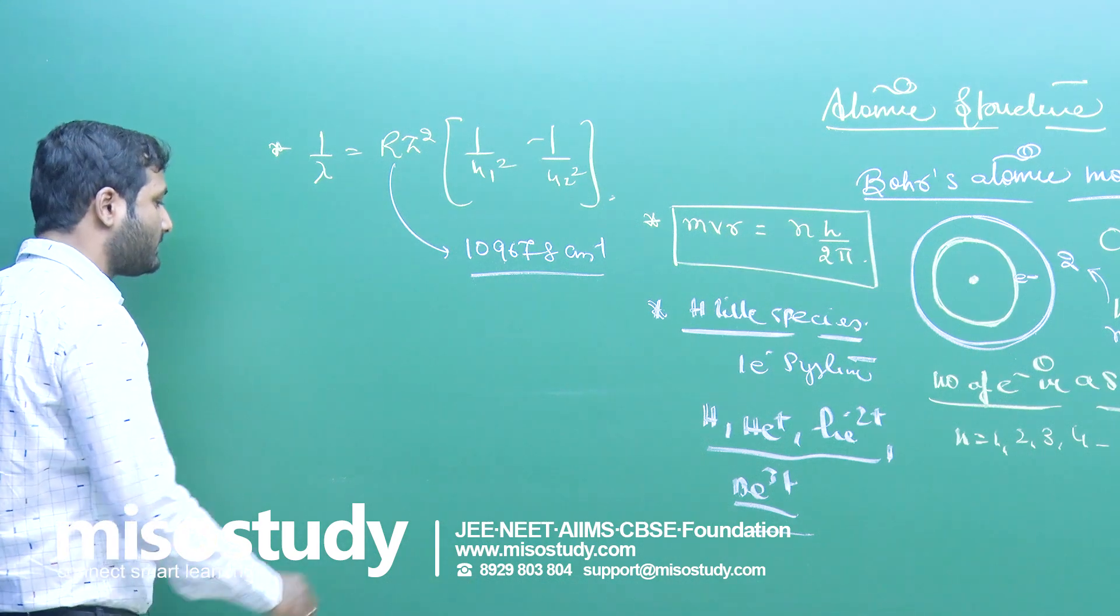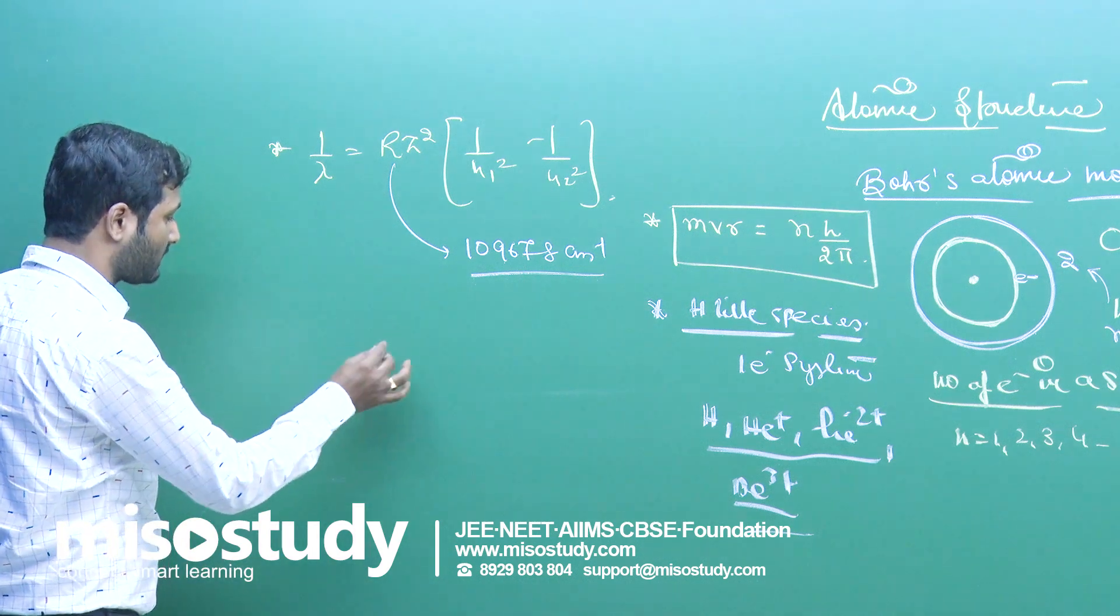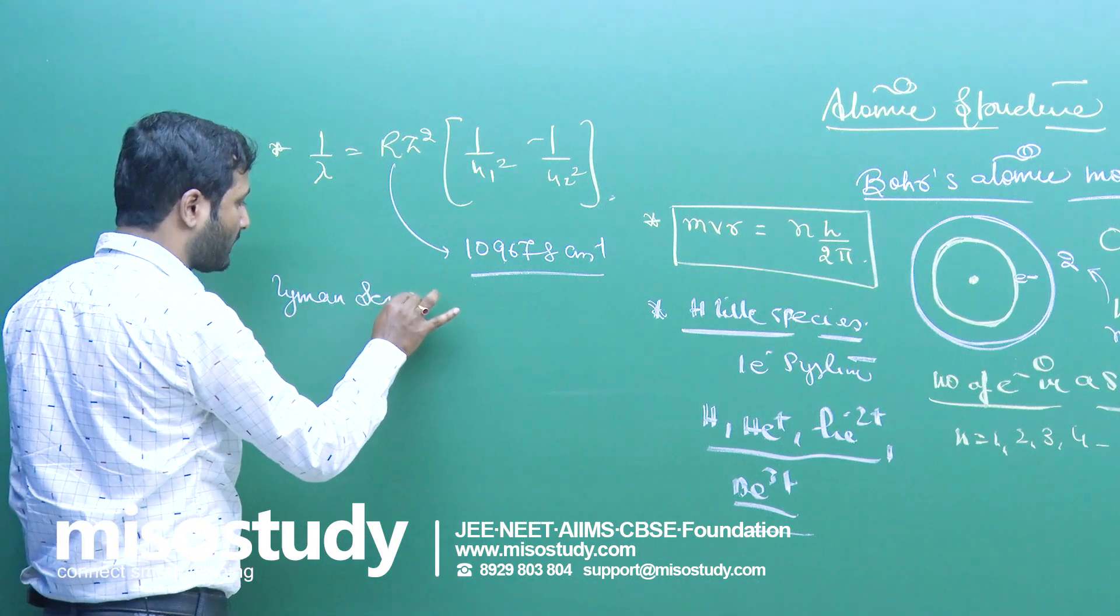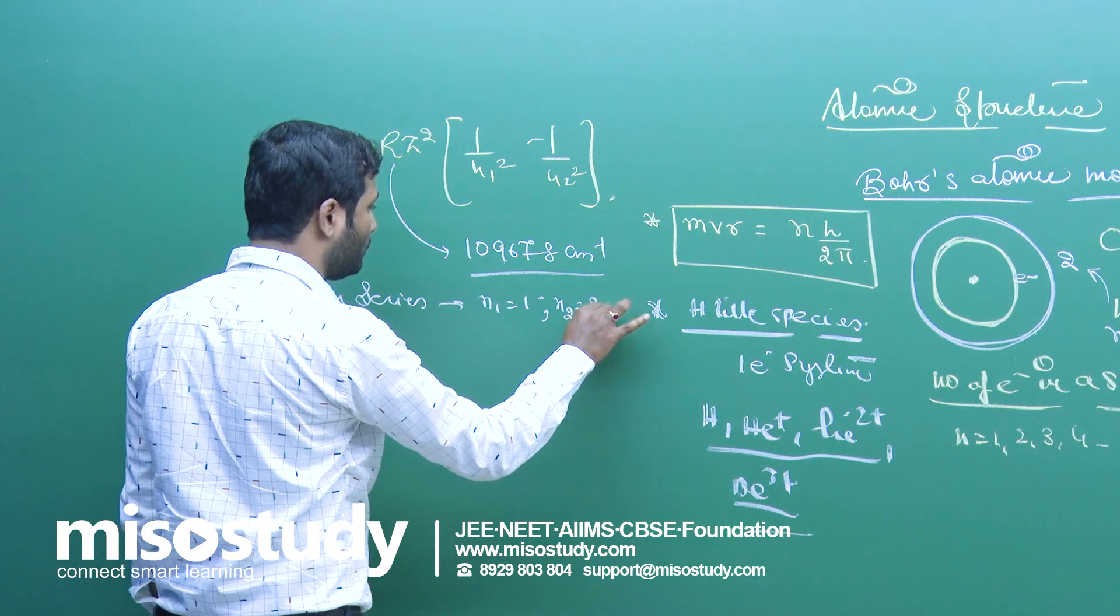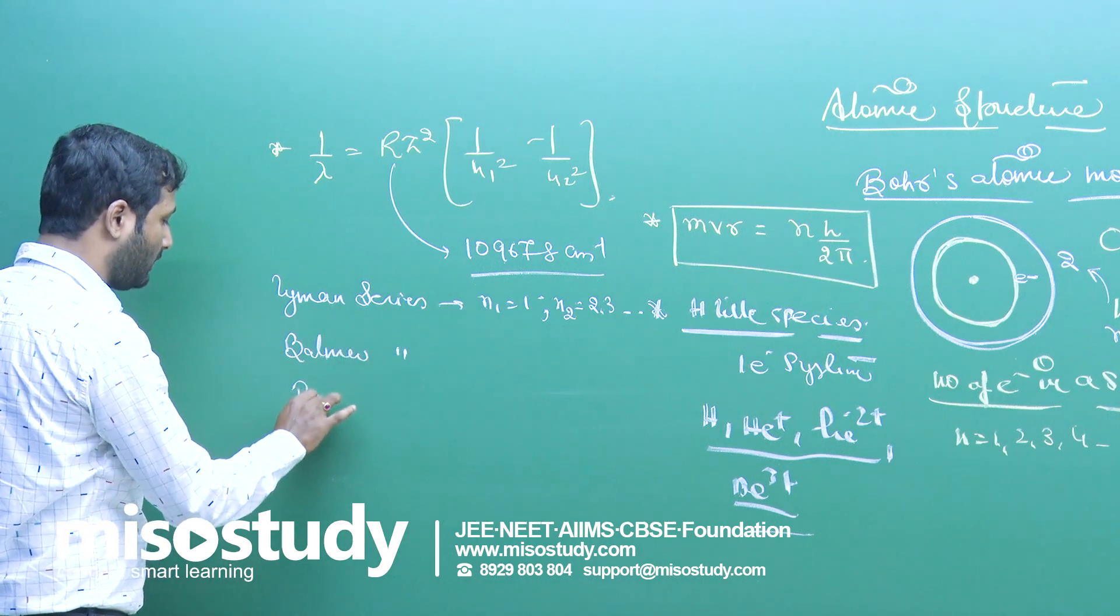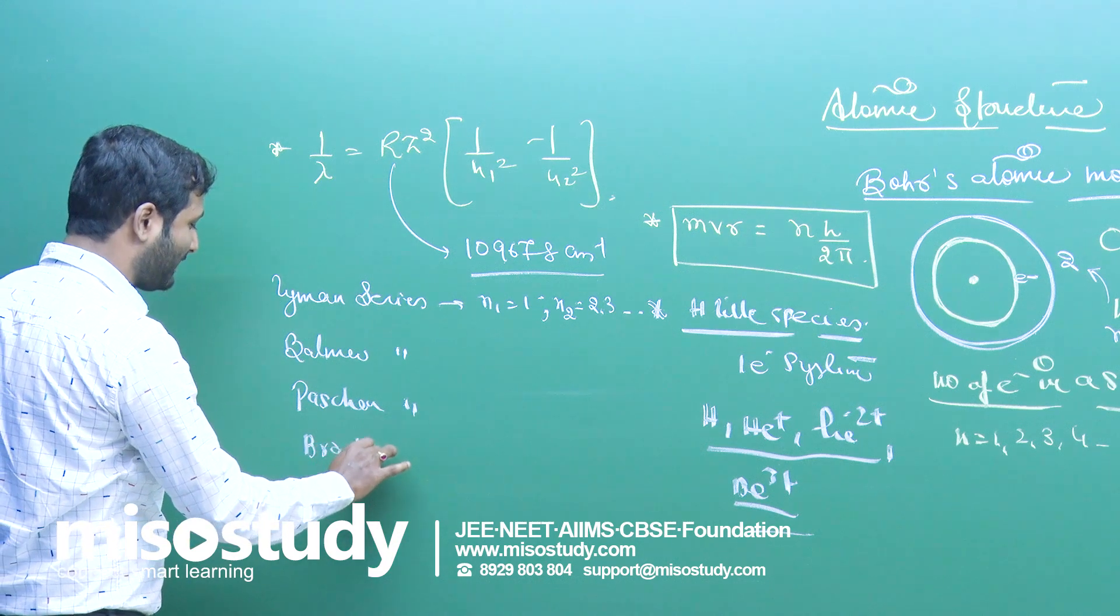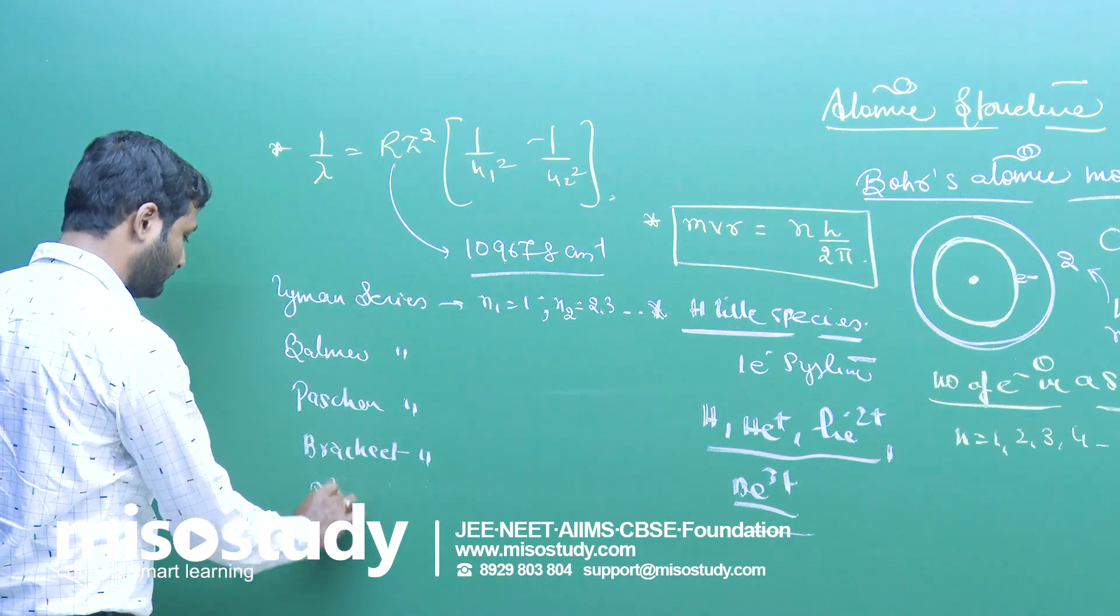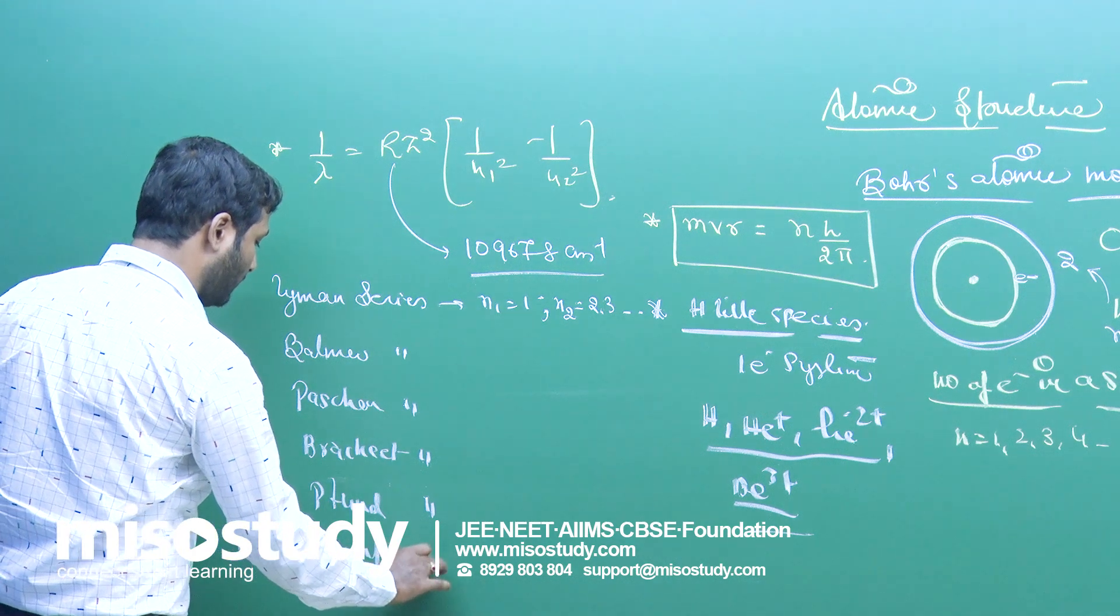n is the series. We know when electron comes into excited state, there comes a series. First series is Lyman series. Lyman-Balmer-Paschen series, Brackett series, Lyman-Balmer-Paschen-Brackett-Pfund and Humphrey series.